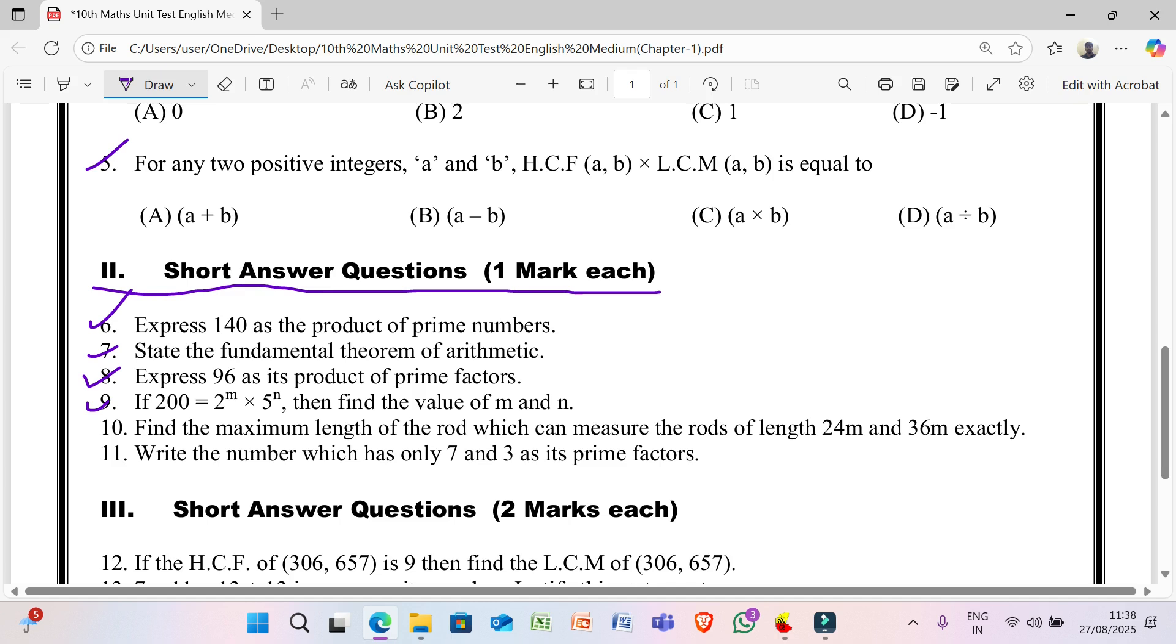9th: if 200 = 2^m × 5^n, then find the value of m and n. 10th question: find the maximum length of the rod which can measure the rods of length 24m and 36m exactly.